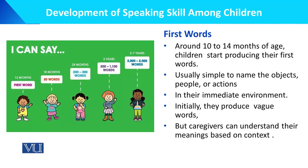At approximately ten to fourteen months of age, children start producing their first word. وہ اپنا پہلا ورڈ ادا کرتے ہیں — usually simple words to name objects, people, or actions.